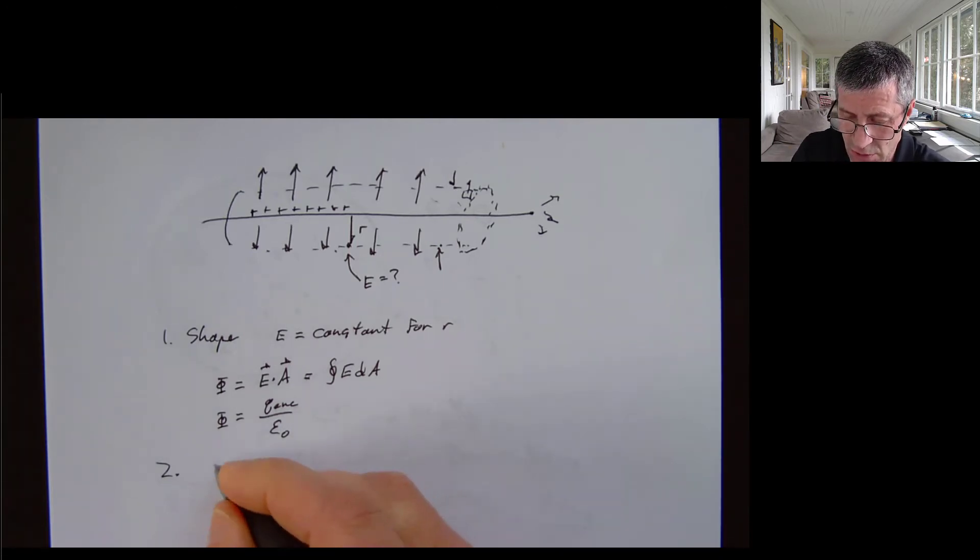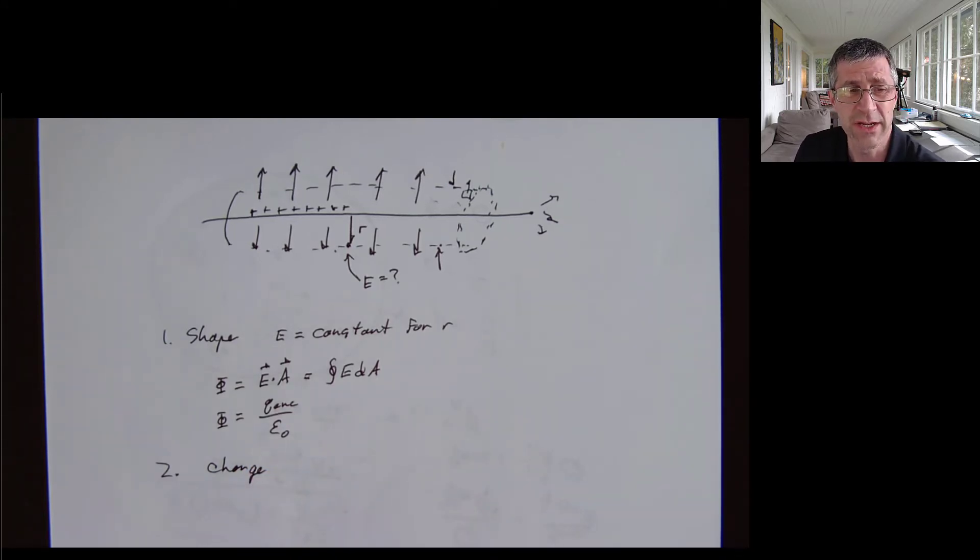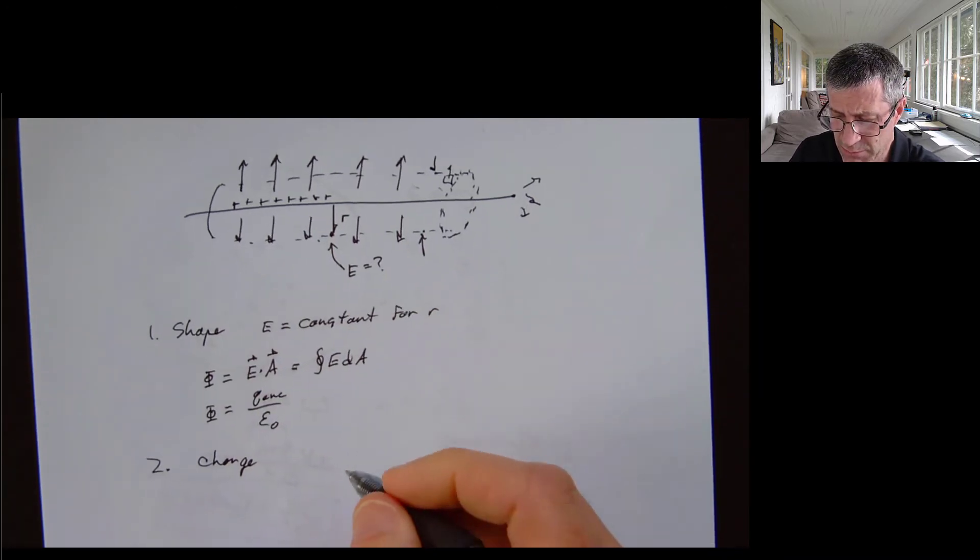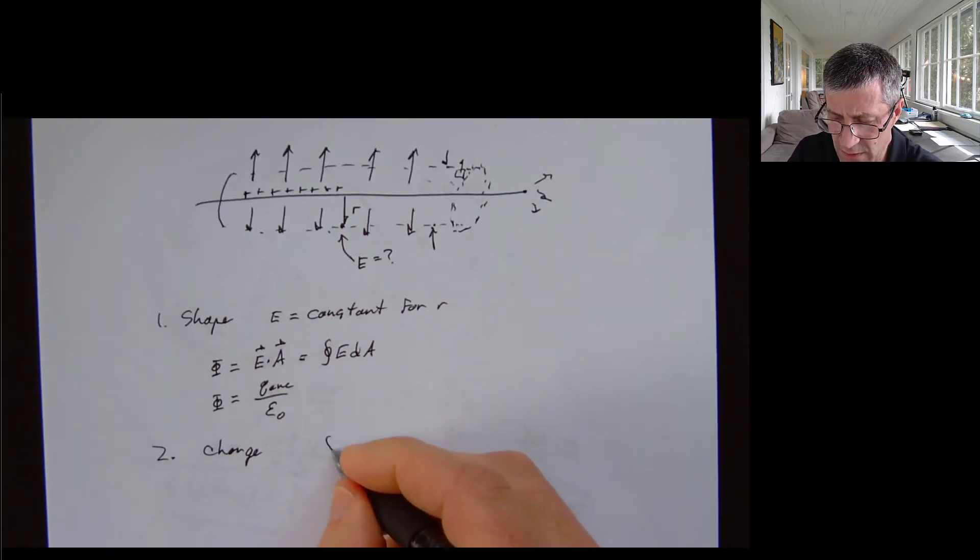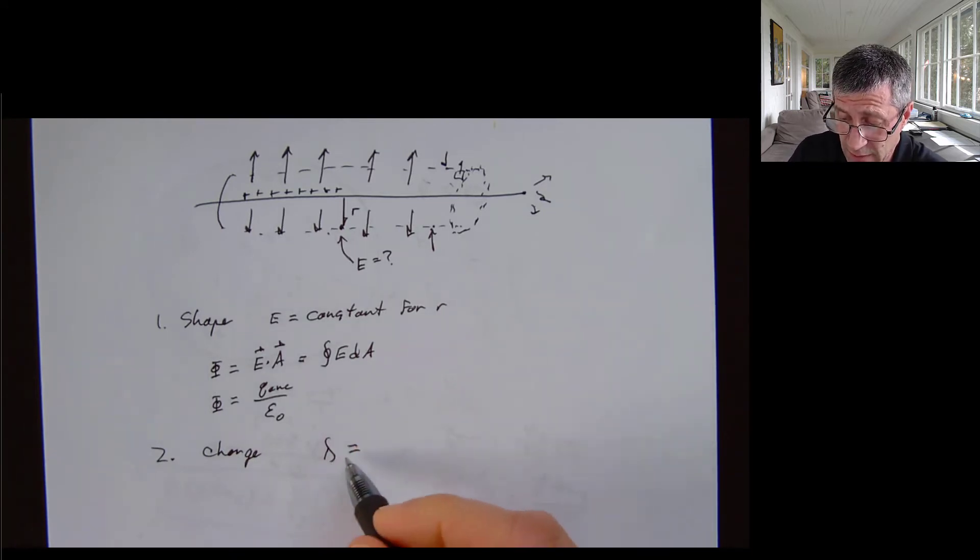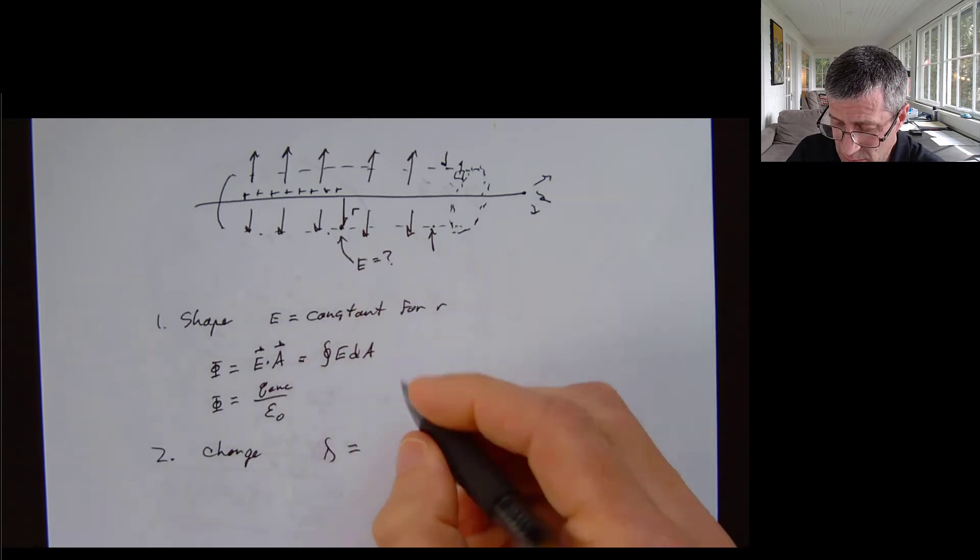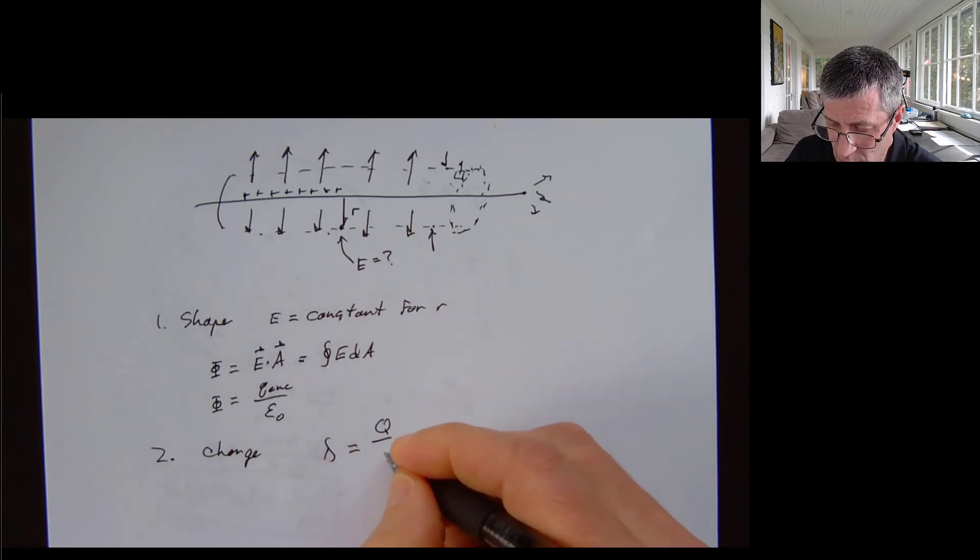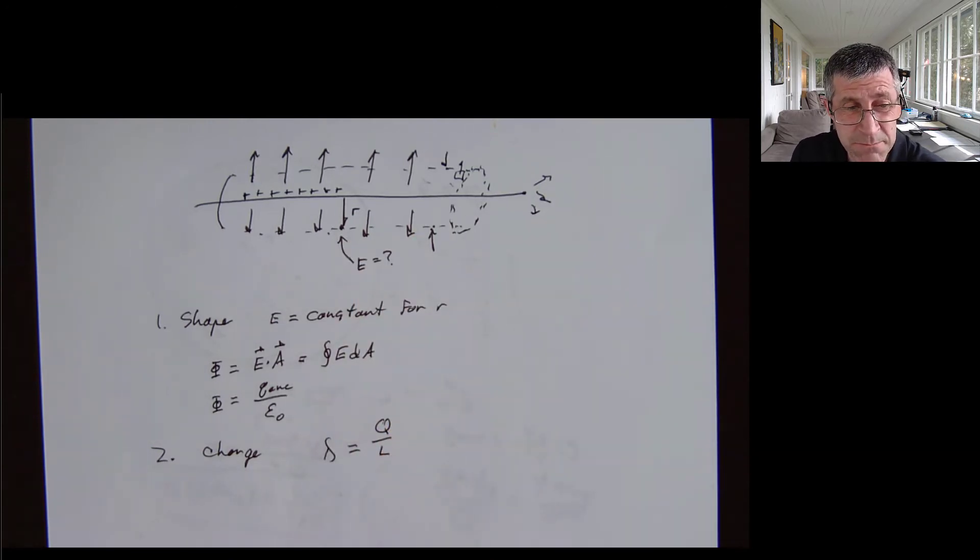So let's do charge first. Charge. And this is where we're going to use density to get ourselves out of headaches. So I don't know what my enclosed charge is. So I'm going to put it in terms of linear density. So if I have something that's really long, I don't know. So let's see. So I'm going to have my linear charge density is going to be my total charge divided by my total length, whatever that is.